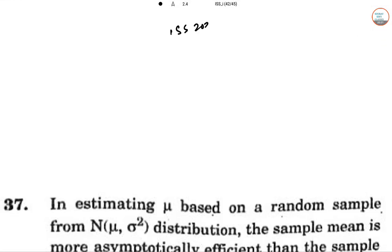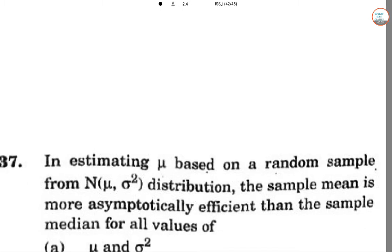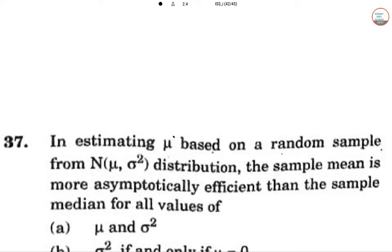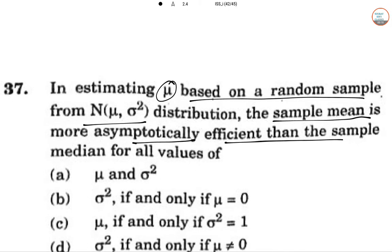Hello students, this is ISI 2021 paper 1 solution. Question 37: In estimating mu based on a random sample from a normal distribution, the sample mean is more asymptotically efficient than the sample median for all values. Which of the following are correct?